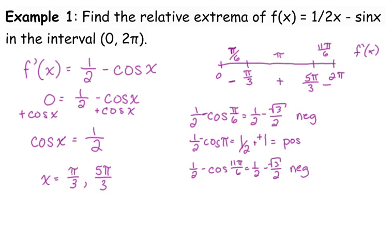So that means at pi over three, our derivative changes from negative to positive, meaning my original function changes from decreasing to increasing, creating a minimum. At five pi over three, my derivative changes from positive to negative, meaning my original function changes from increasing to decreasing, which means that's a maximum.